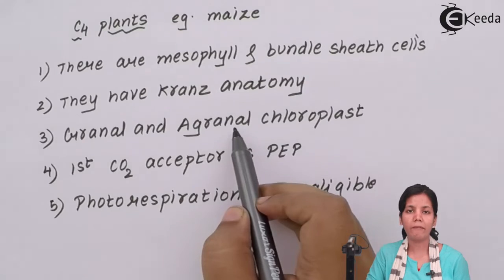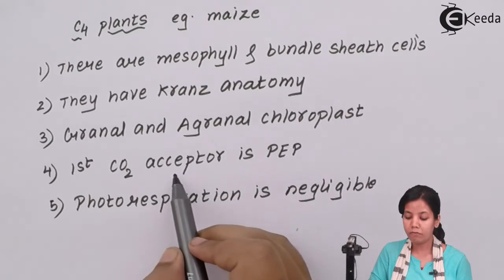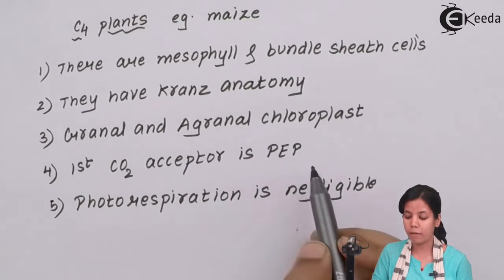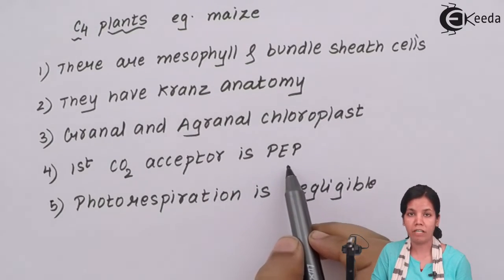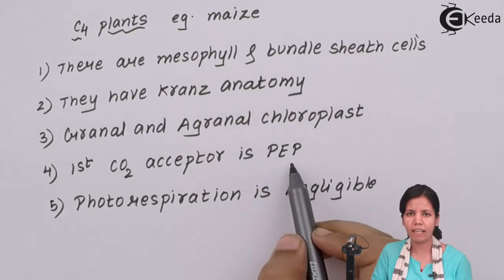The first carbon dioxide acceptor is PEP and PEP has affinity for carbon dioxide which is even low. At 50 ppm it can absorb carbon dioxide or take in carbon dioxide from atmosphere.